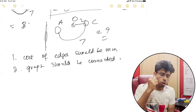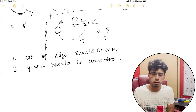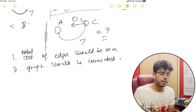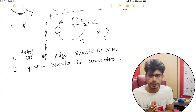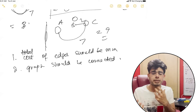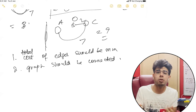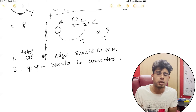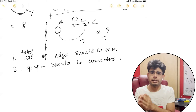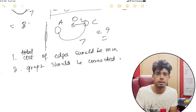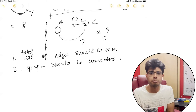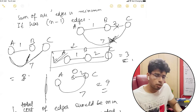Two things to keep in mind: the total cost of the graph should be minimum, and the graph should be connected. You have to remove edges and find that subset which gives you the minimum cost while keeping the graph connected.